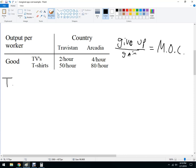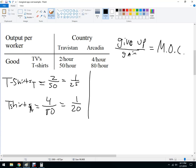So if we want to make T-shirts in this thing, we've got Travistan and Arcadia. We've got T-shirts and television. So if Travistan wants to produce T-shirts, specialize in T-shirts, they're going to give up two TVs and they're going to gain 50. And then T-shirts in Arcadia, they're going to give up four TVs and they're going to gain 80. And so this is one-twenty-fifth is lower than one-twentieth.